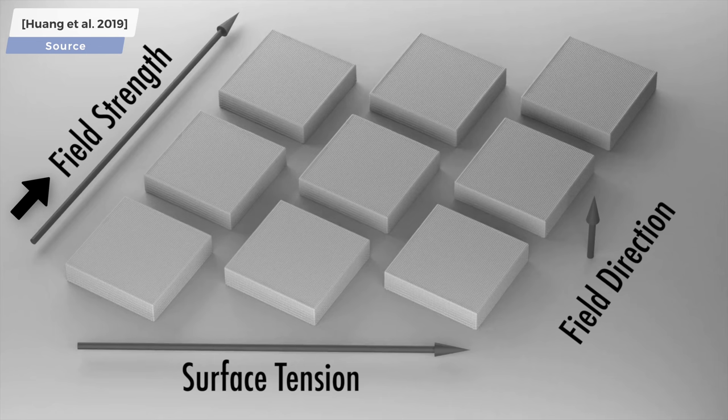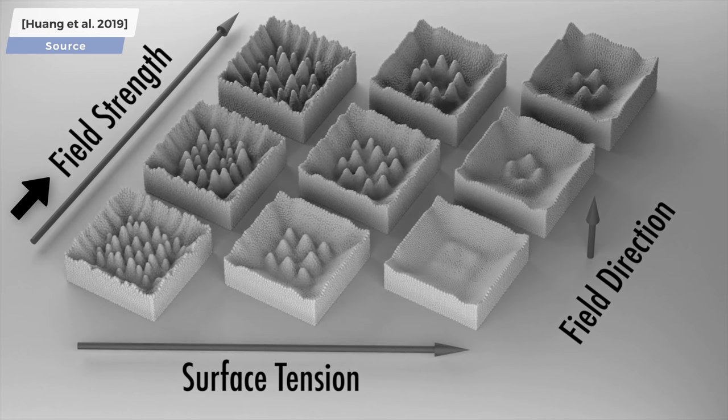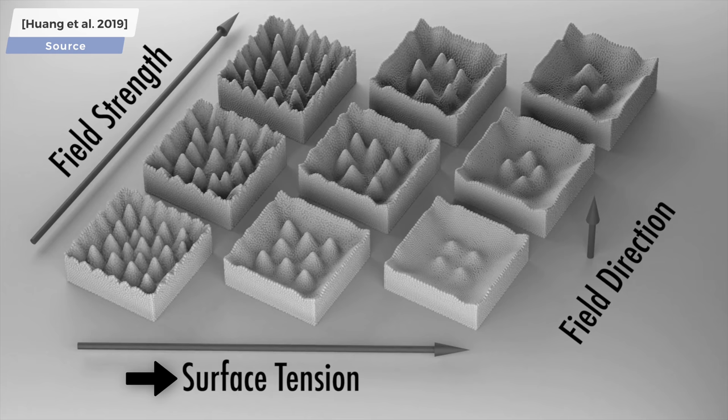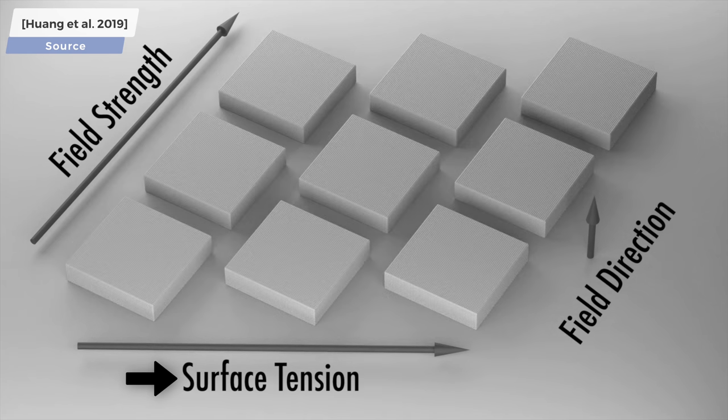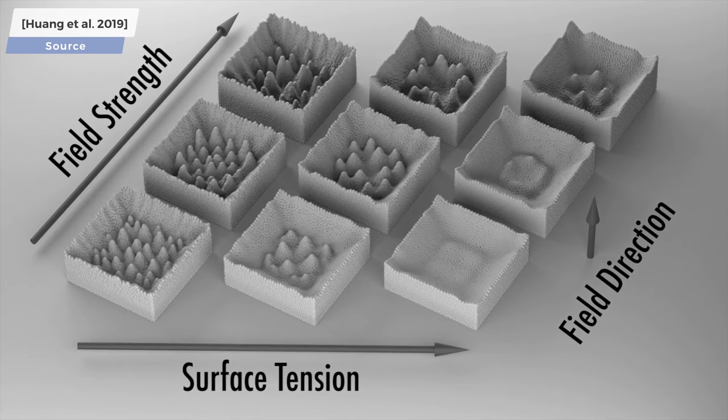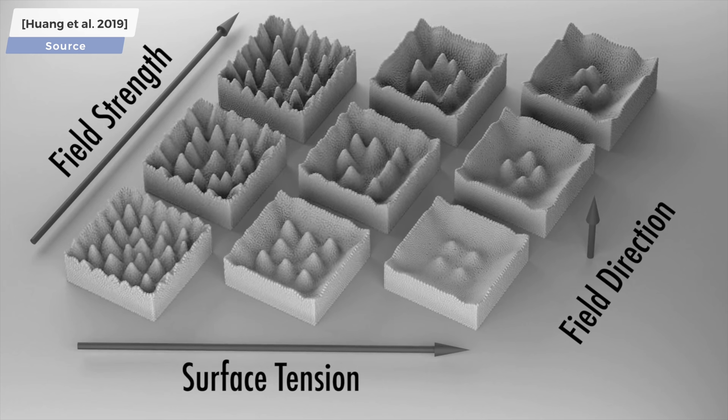Look at this! On this axis, you can see how the fluid disturbances get more pronounced as a response to a stronger magnetic field. And in this direction, you see how the effect of surface tension smooths out these shapes. What a visualization! The information density in this example is just out of this world, and it is still both informative and beautiful.